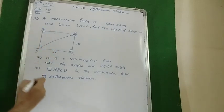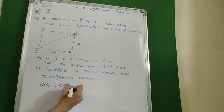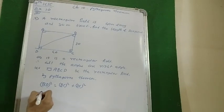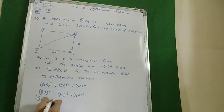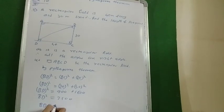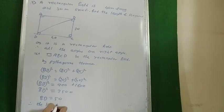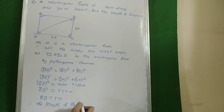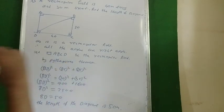By Pythagoras theorem, hypotenuse square — that is BD square — is equal to BC square plus DC square. BC is 30 and DC is 40. So BD square equals 30 square plus 40 square, which is 900 plus 1600, giving 2500. Taking square root, BD equals 50. Therefore the length of the diagonal is 50 meters.